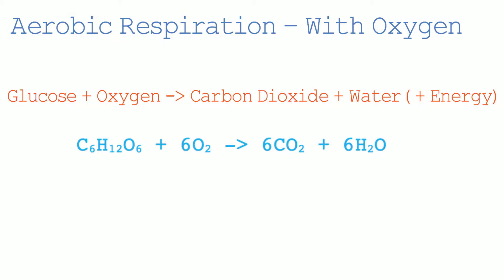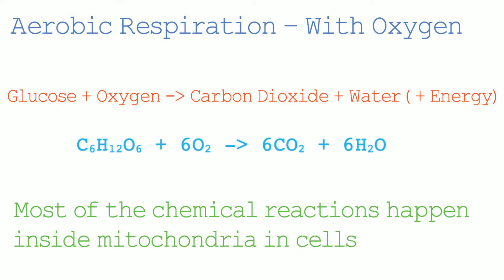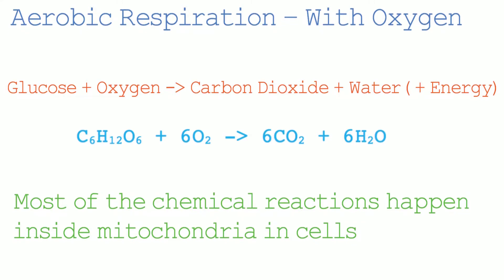Aerobic respiration is happening all of the time in cells in animals and plants, and it's essential for all of the activities listed above. Most of the respiration reactions happen inside the mitochondria of cells. The mitochondria are tiny structures found in cells.